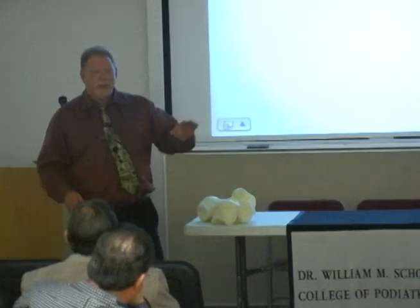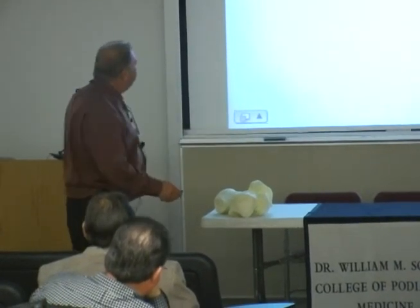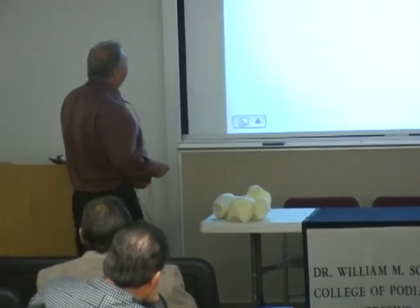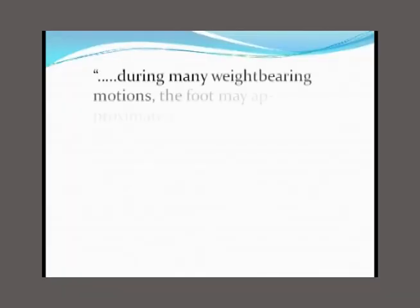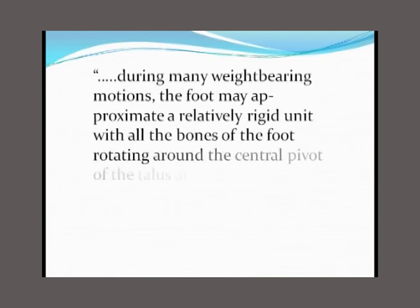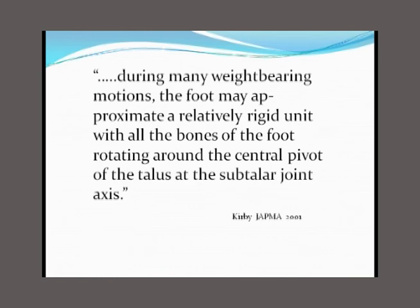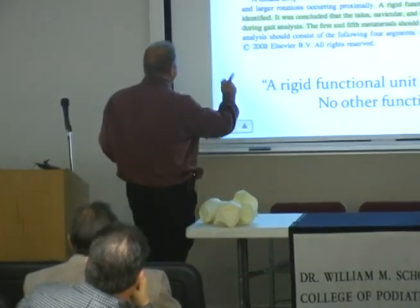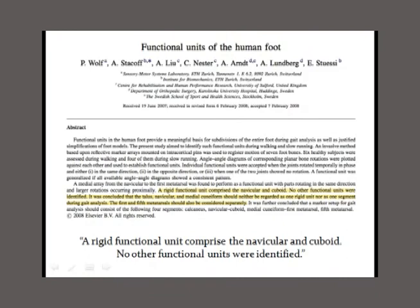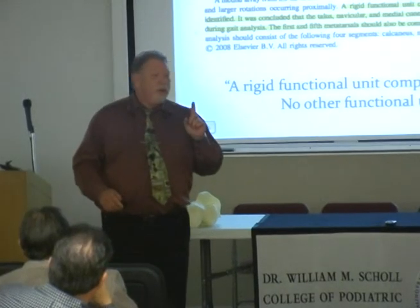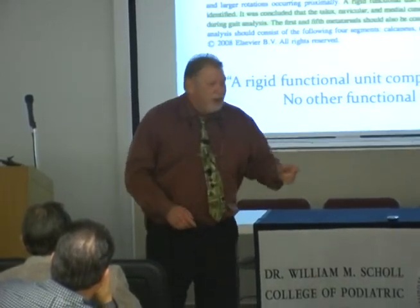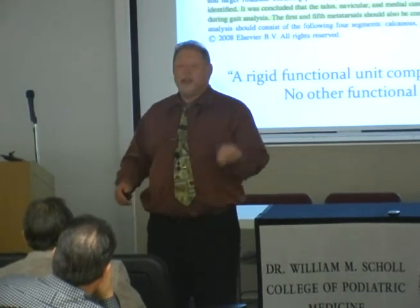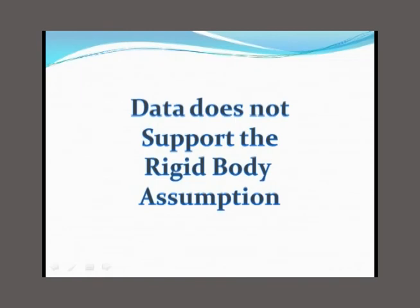My question is: what about the forefoot — what about the rest of the foot? I looked it up in the article, and it said that during many weight-bearing motions, the foot may approximate a relatively rigid unit, with all the bones rotating around the talus at the sub-talar joint axis. It turns out that's been investigated by Nestor, Wolff, and Stakoff, and they found a rigid functional unit comprised only of navicular and cuboid — no other functional units were identified. You cannot ignore all the other axes and all the motion occurring in the forefoot. It's not a rigid functional unit; data does not support the rigid body assumption.